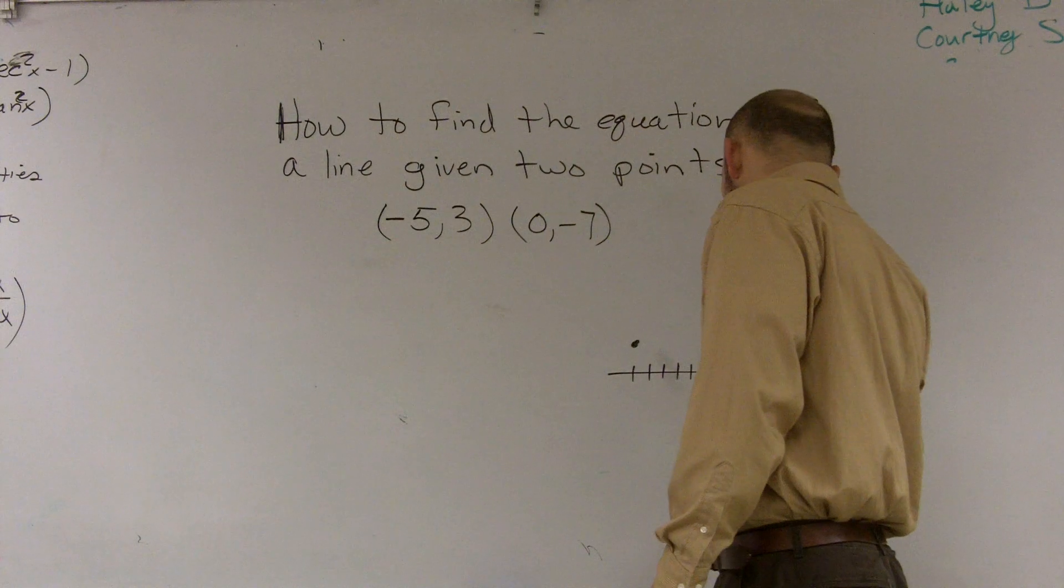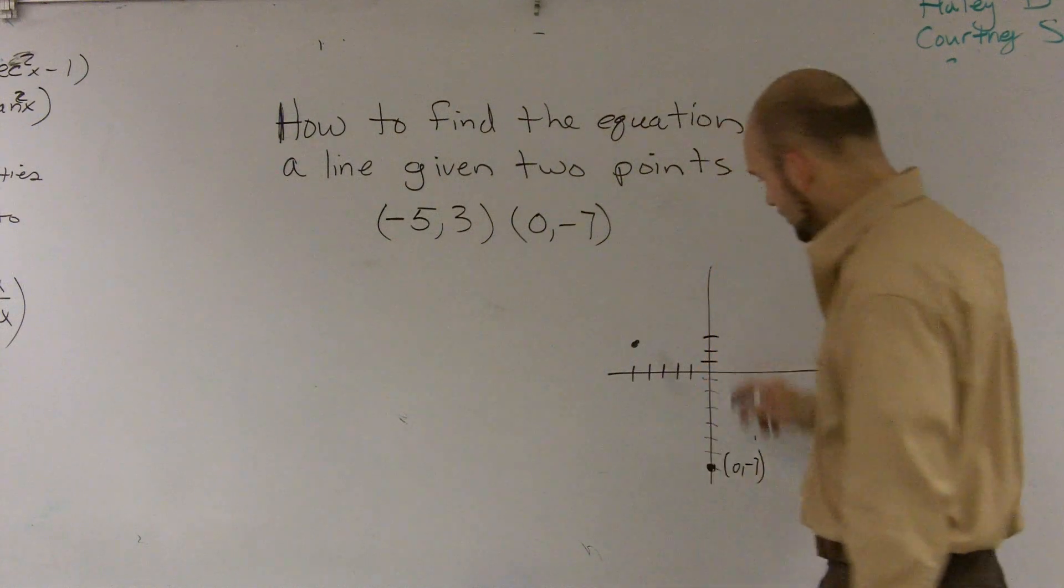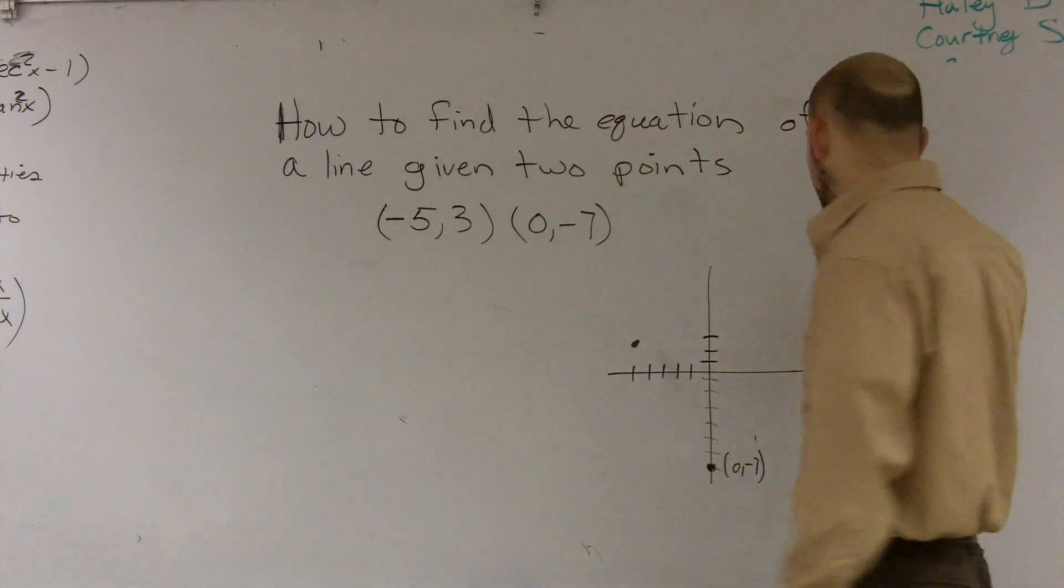So one way I would cheat is I could say, well, I know negative 7 is the y-intercept.